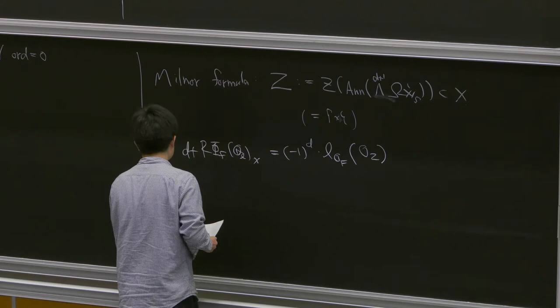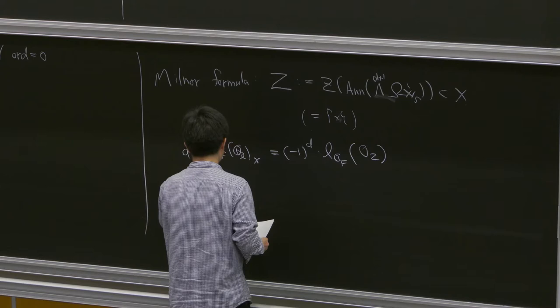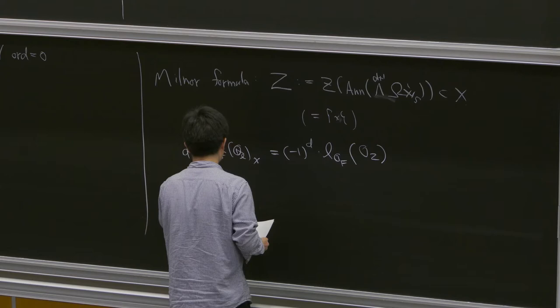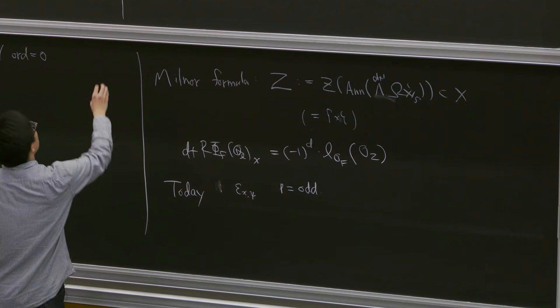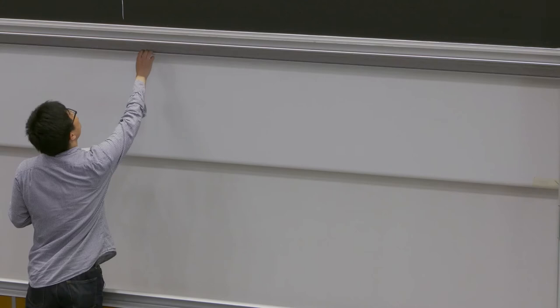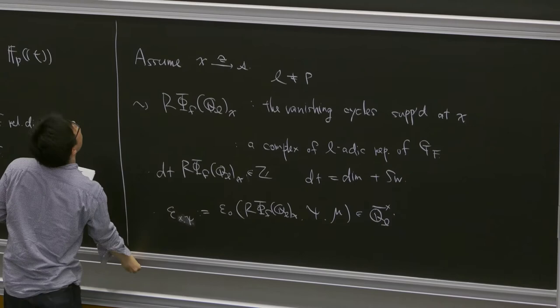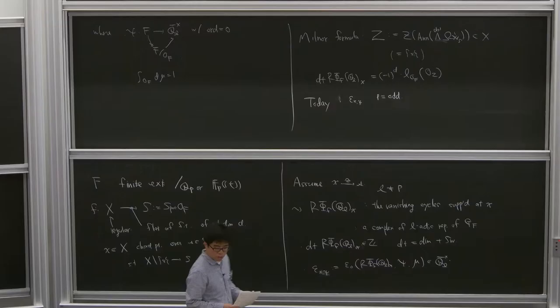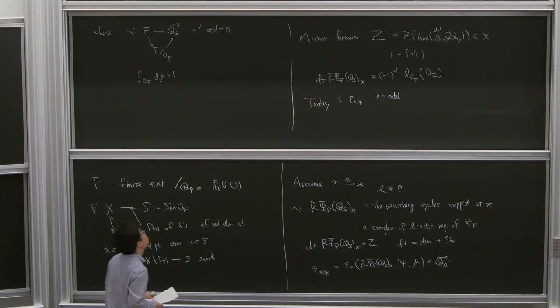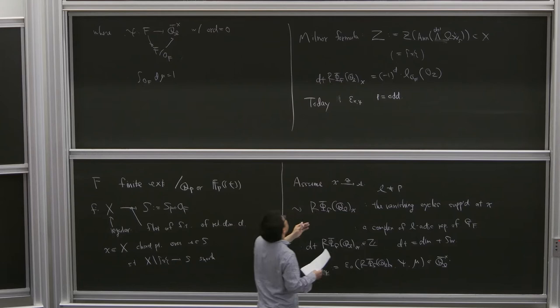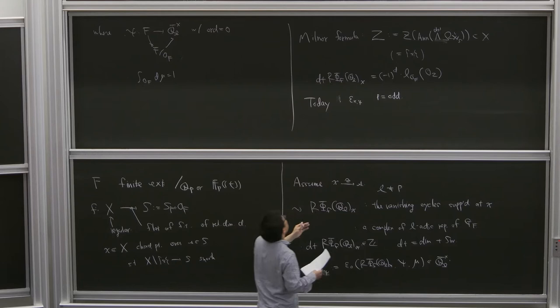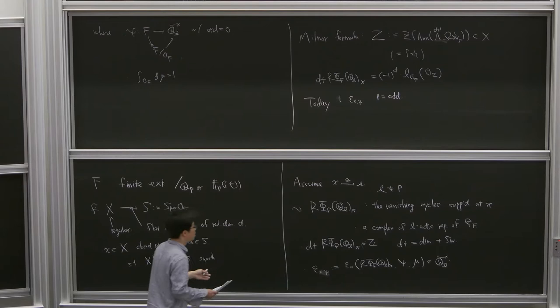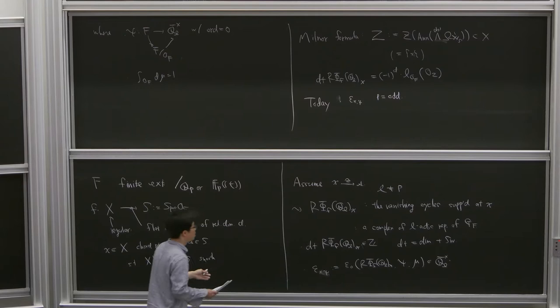And today, I'd like to discuss similar conjecture for the local epsilon factor. But mainly assuming that P is odd. I don't say anything about the derivation of the vanishing cycles. Instead, I say something about this local constant.